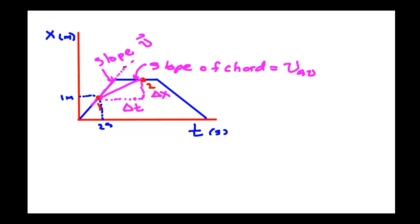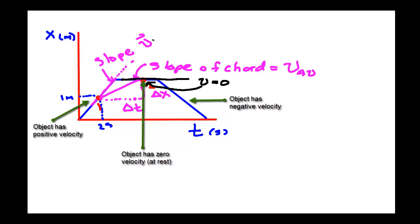It's easy to find the slope of a tangent line when you have straight-line portions — it's just the slope of that line, for example five meters per second. At a peak or trough of the curve, the instantaneous velocity is zero. Where the curve rises, the instantaneous velocity is positive and greater than zero. Where the slope of the line is negative, the instantaneous velocity is negative — meaning the object is moving back toward the origin, not that it's at a negative position.